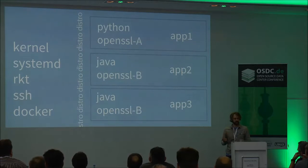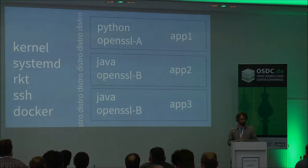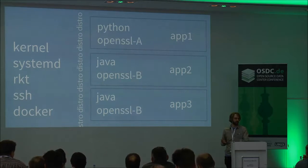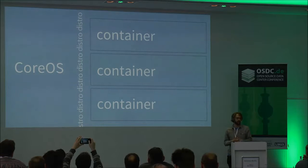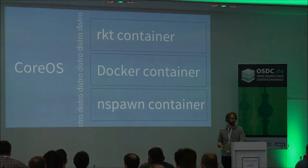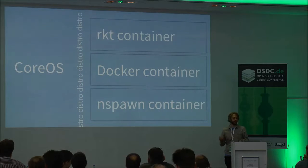Moving to a containerized world pushes all those dependencies into the responsibility of the application itself. The distro becomes a much smaller set of software with no strict dependency on the application, so we can update it at a different cadence without affecting applications. Applications include all their dependencies within their containers, and it also decouples applications from each other so you can potentially run multiple applications on the same system with multiple versions of libraries. This is one of the classic reasons why we use container runtimes. On CoreOS, we support things like Docker out of the box and the Rocket runtime, and also simpler things like nspawn.